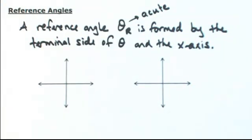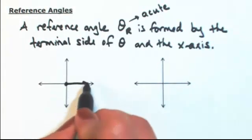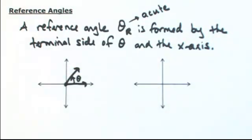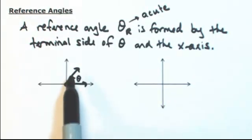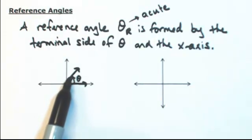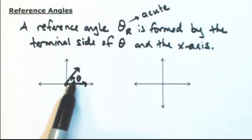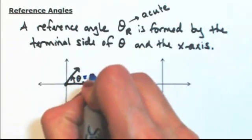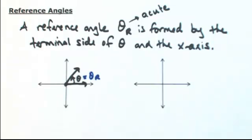Let's look at four different possibilities. If theta is in quadrant one, starting from standard position, the reference angle is formed by the terminal side of theta and the x-axis. From the terminal side there are two ways to get back to the x-axis — go back to the positive side or over to the negative side. Going to the negative side is more than 90 degrees, so in this case theta equals theta r. That's an acute angle.